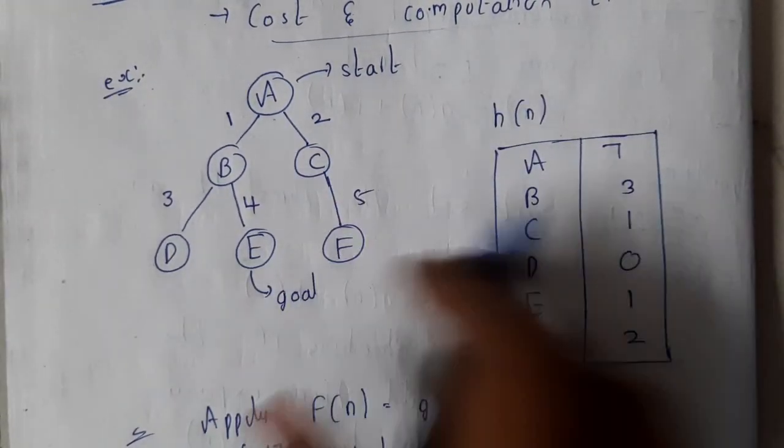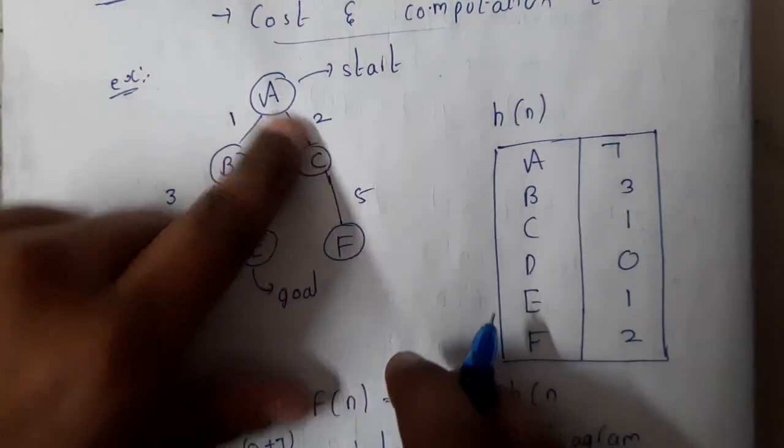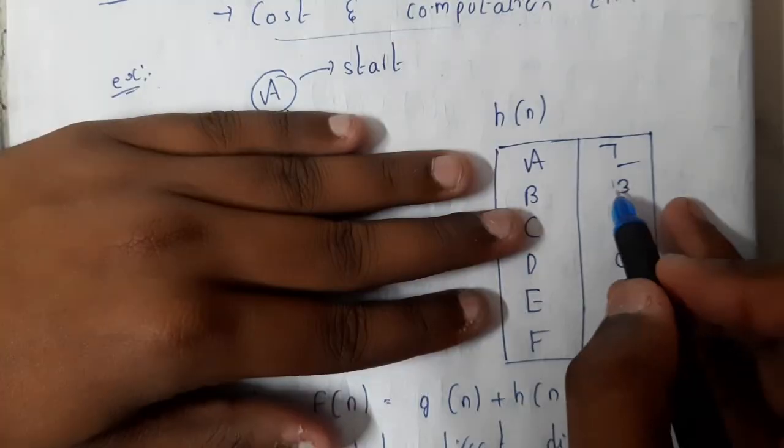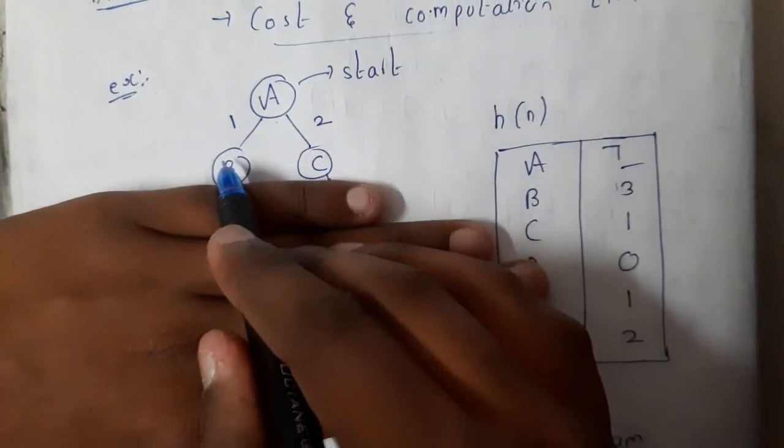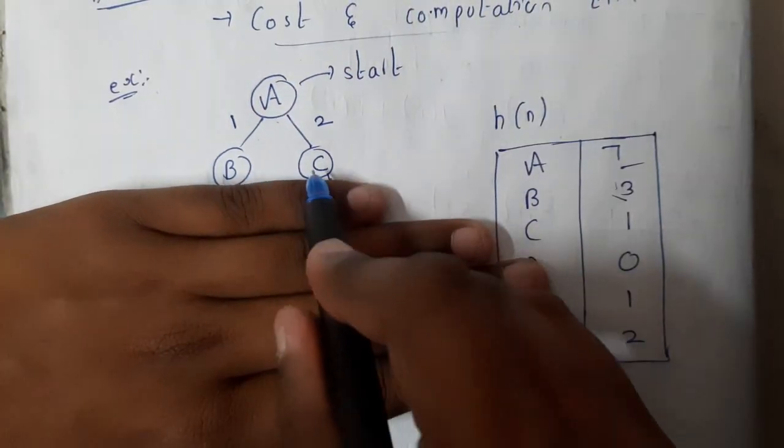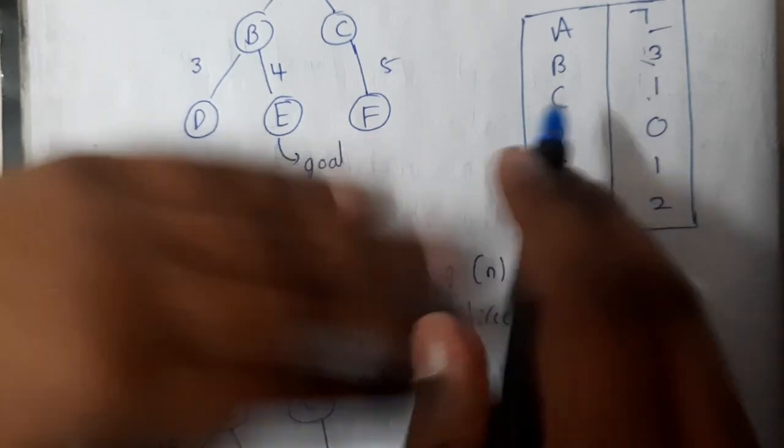So you can apply this table directly on this with a simple track. So basically at A we are not having anything, so directly add 0 plus 7. Now at B from A we traveled one distance of 2 with 3, so 1 plus 3 will be 4 at B. And at C, 2 distance with 1, 3.